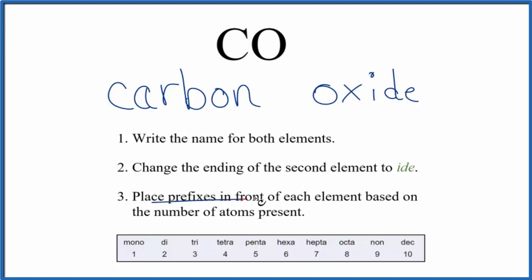We need to use prefixes in front of each element to show how many atoms are present. For carbon, there's only one carbon atom. This is a special rule: when you only have one of the first element, you don't write 'mono' in front of it. We only use 'mono' on the second element.